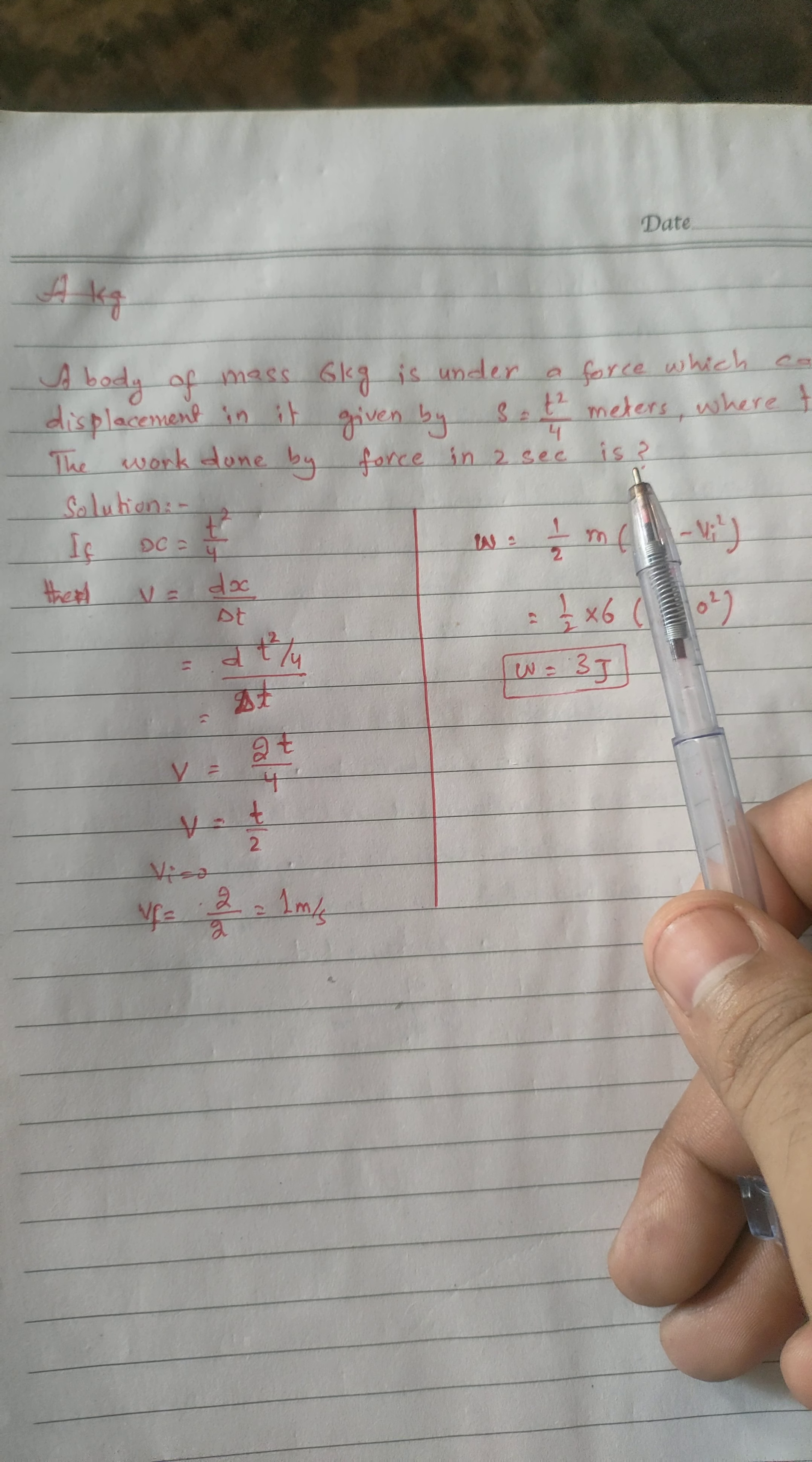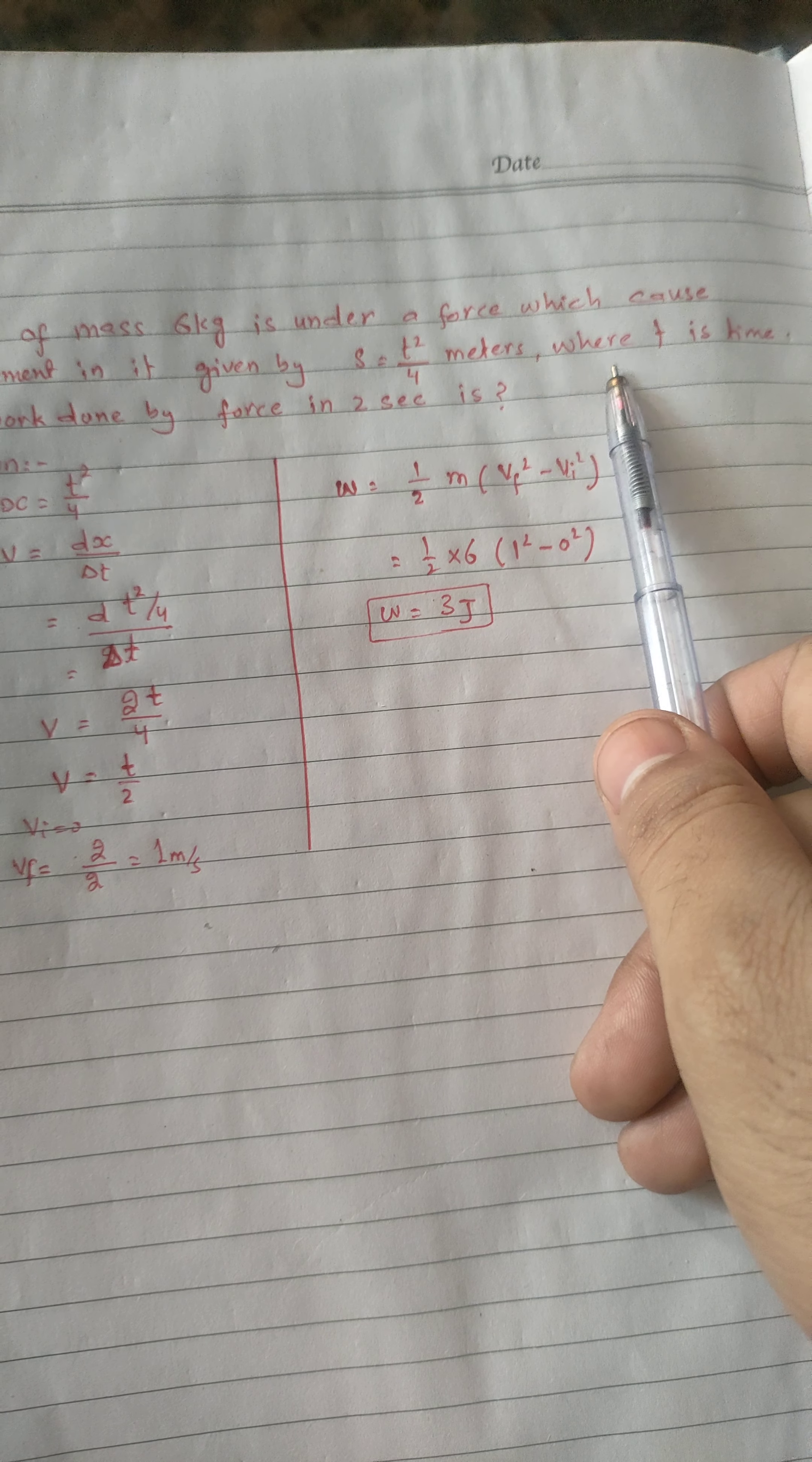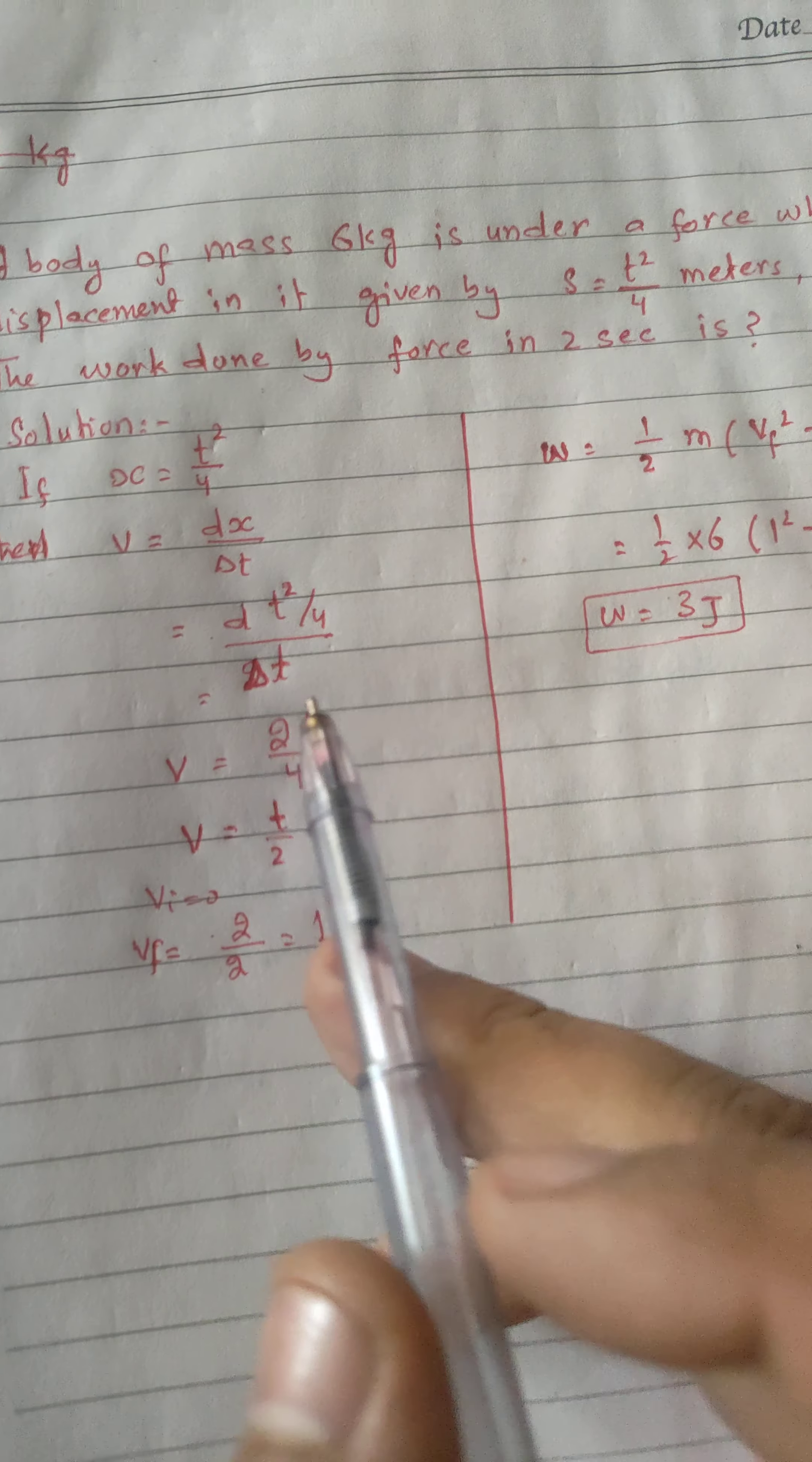Here we have 6 kg of mass given and displacement information is T²/4. If we have time T to represent, then we have 2 seconds. Here we have a formula which we will use.